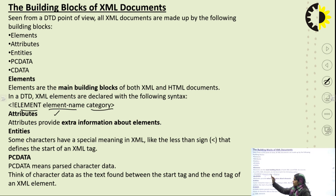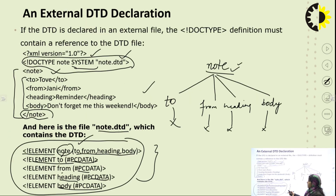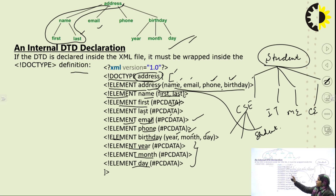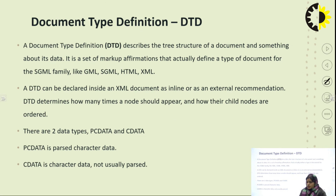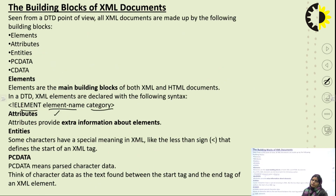Attributes provide extra information about elements. Whatever data comes under attributes gives additional information for a particular element. For example, in a name element, 'first' and 'last' are its attributes, giving extra information about the name — such as whether it includes a middle part. Attributes are simply used to provide additional or extra information about elements.